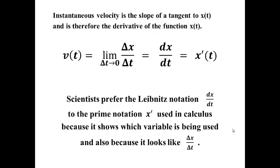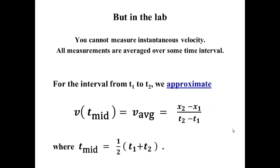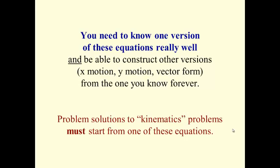The instantaneous velocity is the limit as Δt goes to zero, so it's the derivative, which you may know as x'(t), but that we prefer to call dx/dt. dx/dt looks just like Δx over Δt, so it's a very familiar idea that when you take the limit of one thing, you get the other. In the lab, we'll use the average velocity to estimate the instantaneous velocity at the midpoint of an interval. You'll get more about that in the lab.